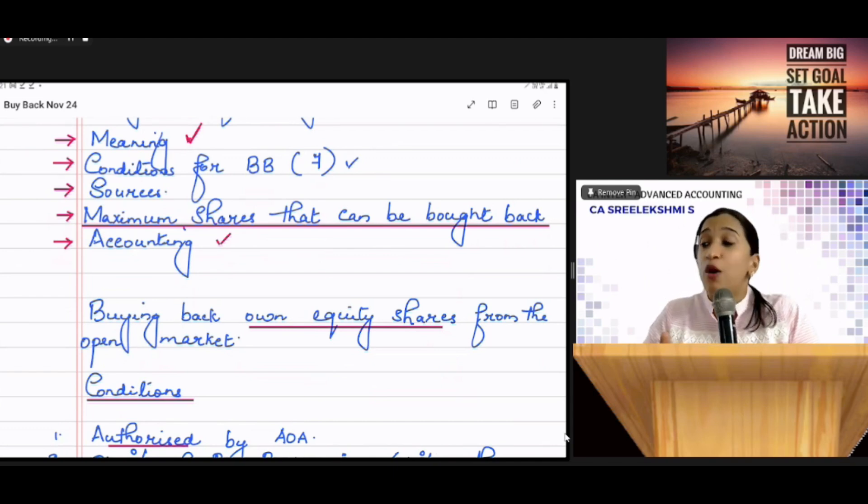So, if you are using funds out of all profits, free reserves or premium, an amount equal to nominal value of shares bought back should be transferred to CRR Capital Redemption Reserve Account. This CRR is a specific reserve. The only one function of CRR is issue of fully paid bonus shares.